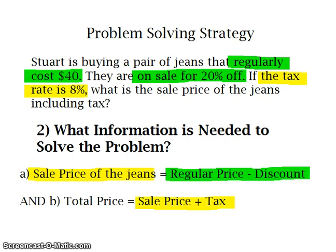Secondly, the information that is needed in order to solve the problem are: (a) the sale price of the jeans, and (b) I need to find the total price. This is a multi-step problem.